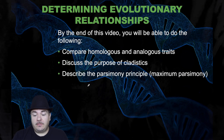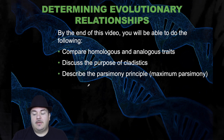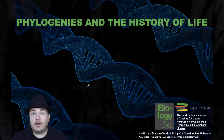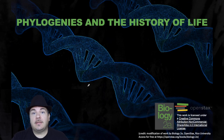That's the end of the video. We discussed homologous and analogous traits, maximum parsimony, and forming phylogenetic trees. In the next video, we're going to continue talking about phylogenetic trees. Until then, this has been Dr. Sage.